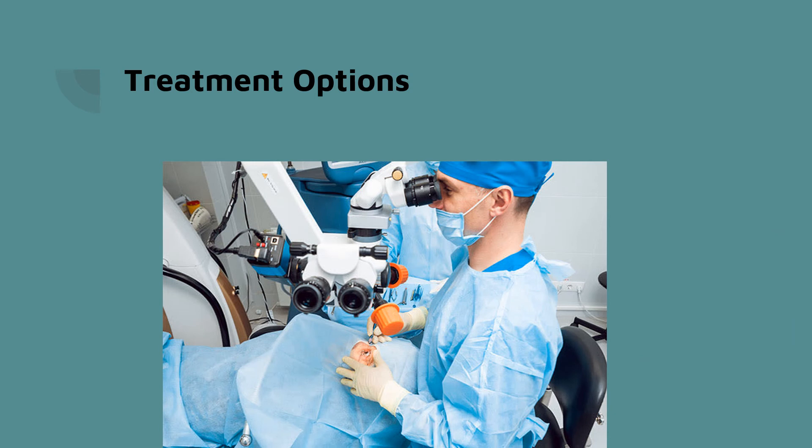So if an ophthalmologist tells us we have a cataract, what can we do about it? Unfortunately, there are no medications that we can take to fix a cataract, so our only option is surgery. Surgery sounds scary, but cataract surgery is a very low-risk procedure. It takes about 10 to 20 minutes. The surgeon will cut out the discolored and hardened lens and implant a nice clear lens like the ones we were most likely born with. Most patients see a dramatic improvement in their vision within the next day or so.